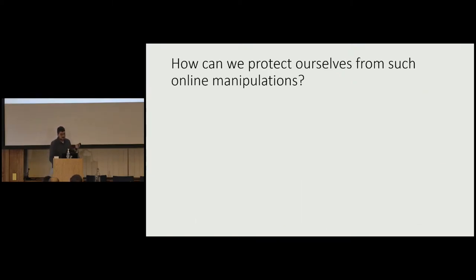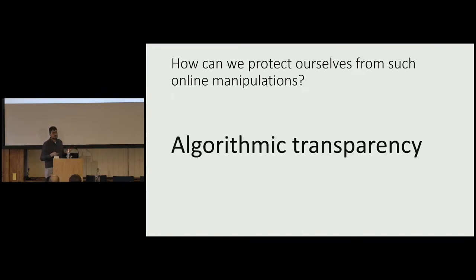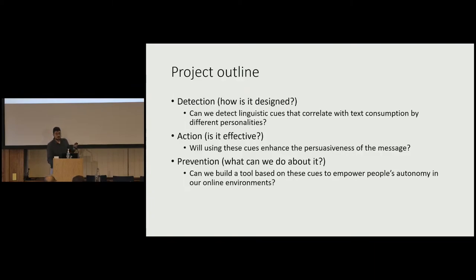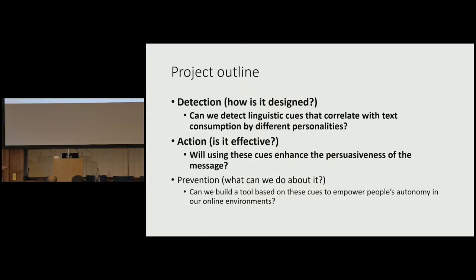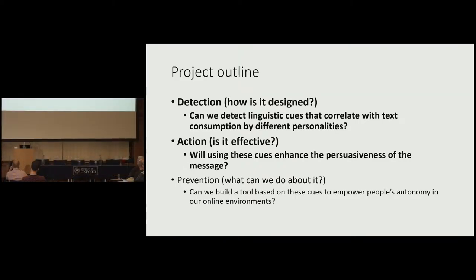We need to think about how we can protect ourselves from such manipulations. The only thing that comes to mind is algorithmic transparency — we need to know how the manipulation machine is designed and whether it is effective, and only then can we build effective interventions to curtail these effects. This talk will address detection and action, leaving prevention for another time.